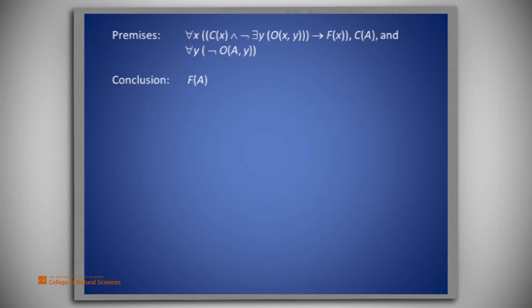So how would we construct a proof of this? Let's begin by looking at the conclusion. The conclusion is F(A). The first premise might yield us F(A) if we were to instantiate the x to A. So idea number one is to instantiate the x to A. In premise one, there are two statements in the antecedent to F(A). The first of those statements would be C(A) after the instantiation of x to A. That's good because it is our second premise.